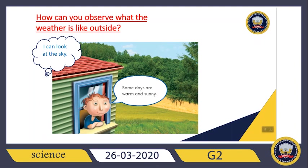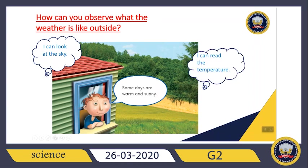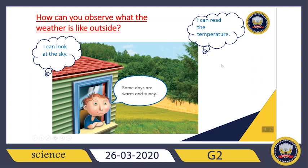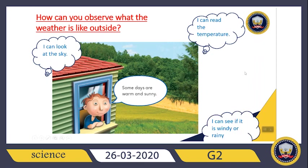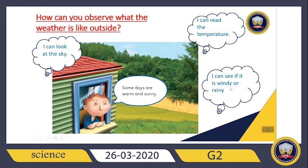Maybe I can see a lot of clouds and dark, so it will be cloudy. Maybe I will see rain, so the weather is rainy. Sometimes you can see snow and the weather will be snowy. But some days there is sun and the weather is so good — it will be a sunny day. I can look at the sky, I can read the temperature from any website or from your mobile. You can know what the weather is. I can see if it is windy or rainy. If you look at the sky or look from the window, you can see if it will be windy or rainy. That's how we can observe the weather.